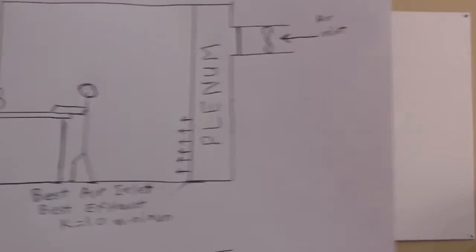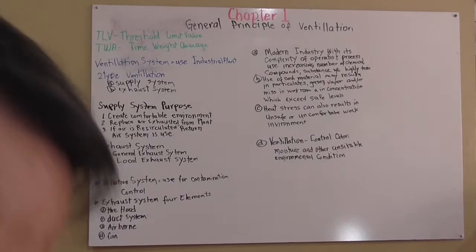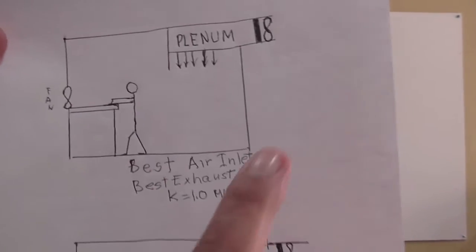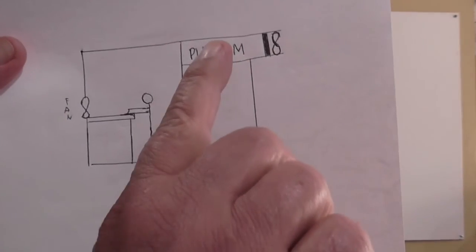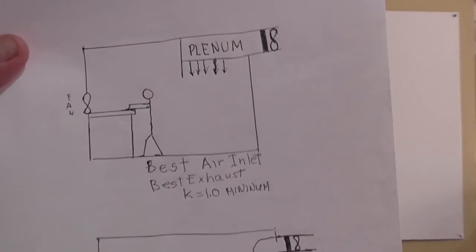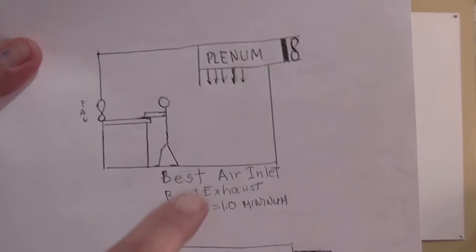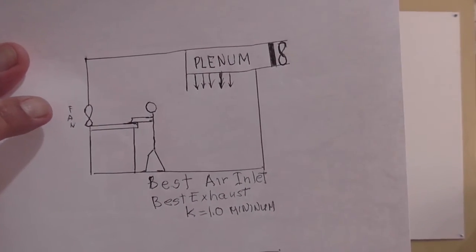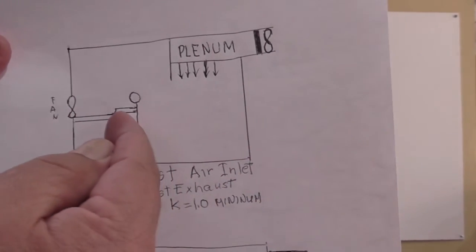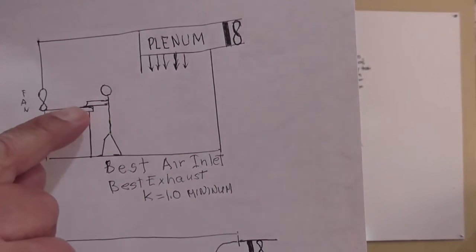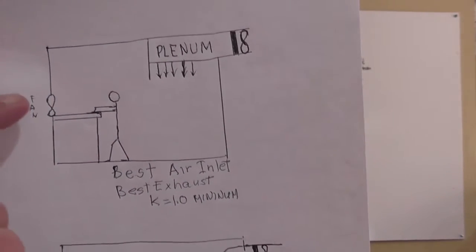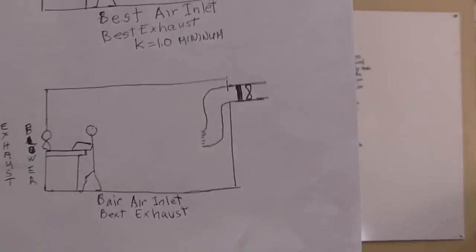We have another one here. This time the air supply is coming from the plenum on top, and then it will come down and be pulled by this exhaust fan. The air travels behind the employee, the workers, and goes to the table, picks up the contaminant, and then exhausts to the outside of the building.